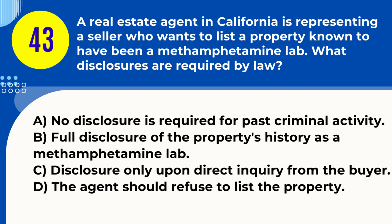Question 43. A real estate agent in California is representing a seller who wants to list a property known to have been a methamphetamine lab. What disclosures are required by law? A. No disclosure is required for past criminal activity. B. Full disclosure of the property's history as a methamphetamine lab. C. Disclosure only upon direct inquiry from the buyer. D. The agent should refuse to list the property. Answer: B. Full disclosure of the property's history as a methamphetamine lab. Explanation: California law requires disclosure of a property's history if it was used as a methamphetamine lab, due to potential health hazards.